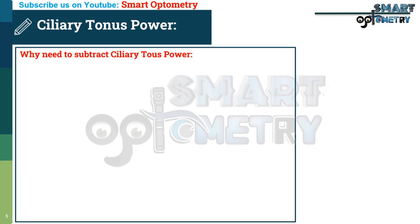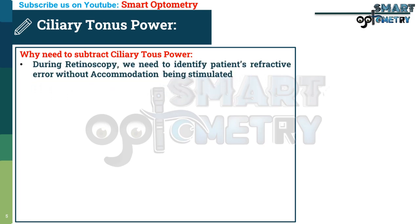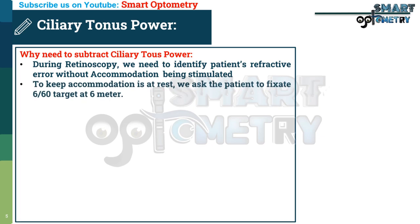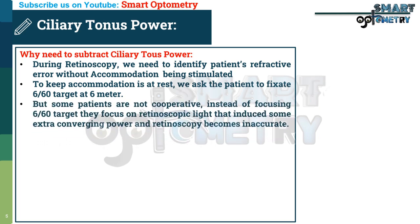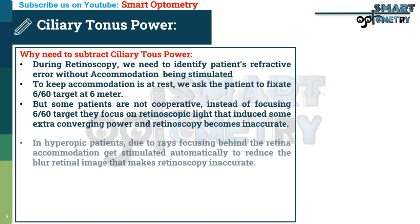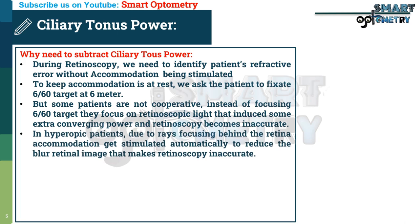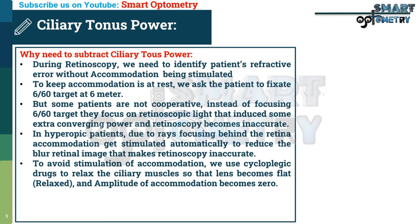Why do we need to subtract ciliary tonus power? During retinoscopy, we need to identify the patient's refractive error without accommodation being stimulated. To keep accommodation at rest, we ask the patient to fixate a 6/60 target at 6 metres. But some patients are not cooperative — instead of focusing on the 6/60 target, they focus on the retinoscopic light, inducing extra converging power and making retinoscopy inaccurate. In hyperopic patients, accommodation gets stimulated automatically due to blur behind the retina. To avoid this, we use cycloplegic drugs to relax the ciliary muscles so that the lens becomes flat and the amplitude of accommodation becomes zero.